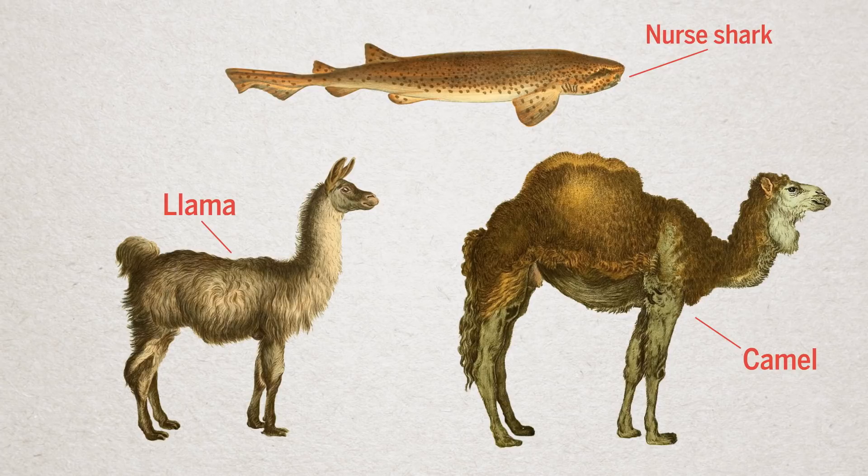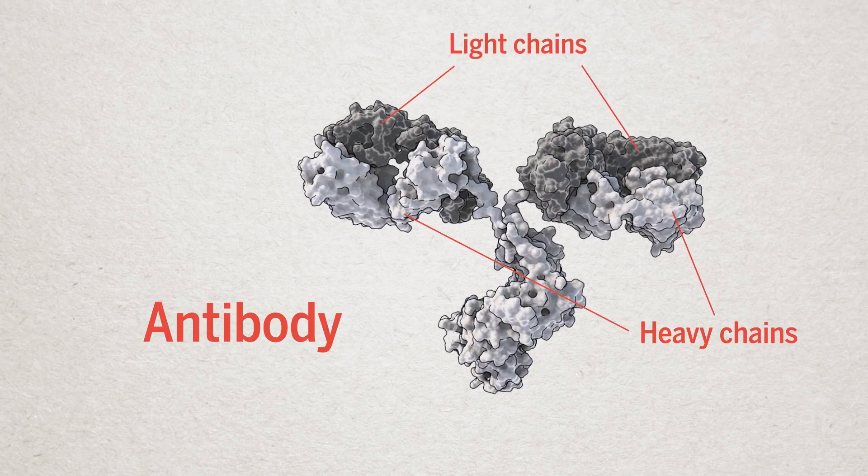Regular antibodies are made of four protein chains, two heavy and two light. Small antibodies are made of just two heavy chains.